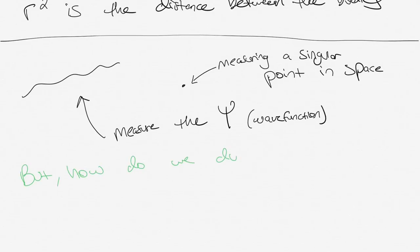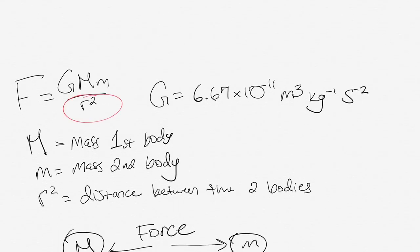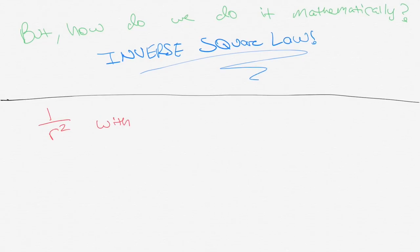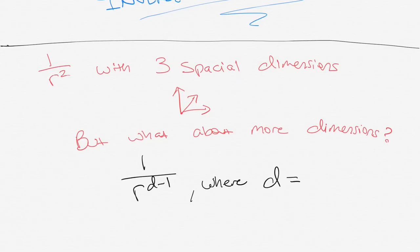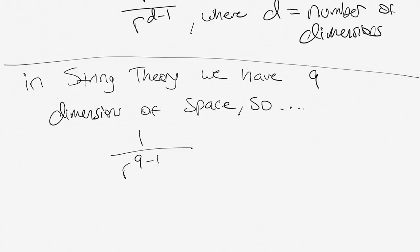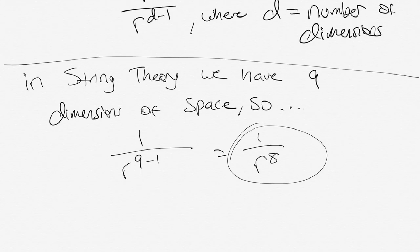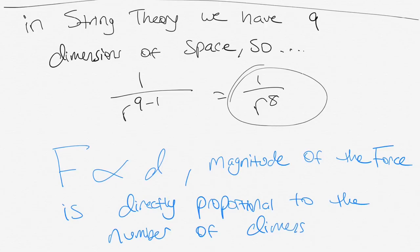We're using the inverse square law. The way that the inverse square law ties in mathematically is very important because we use 1 over r squared for the three spatial dimensions. But when it comes to having more dimensions, what exactly do we do? The inverse square law turns into 1 over r to the d minus 1 power, where d is considered to be the number of dimensions. In string theory, we have nine dimensions of space. So 1 over r to the 9 minus 1 is 1 over r to the eighth power. Something else to keep in mind is that the magnitude of the force is directly proportional to the number of dimensions.